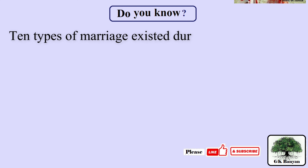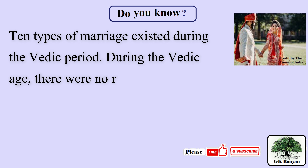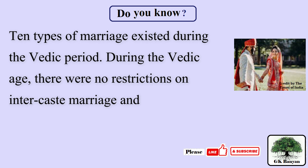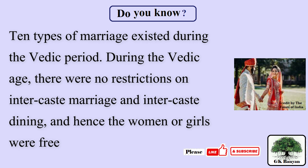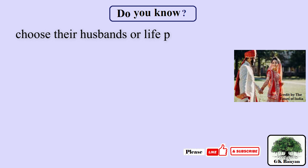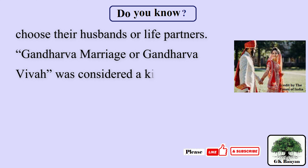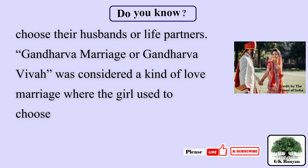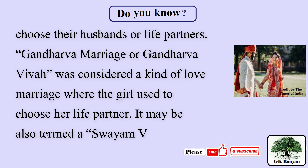10 types of marriage existed during the Vedic period. During the Vedic age, there were no restrictions on inter-caste marriage and inter-caste dining, and hence women or girls were free to choose their husbands or life partners. Gandharva marriage was considered a kind of love marriage where the girl used to choose her life partner.